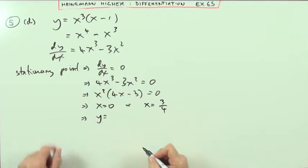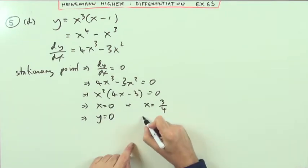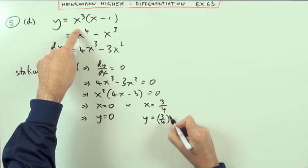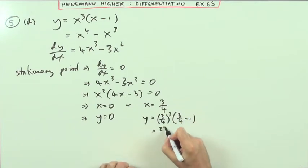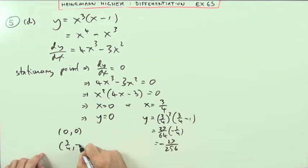At the same time, work out what y would be using the formula. That one's easy. Nothing times anything is nothing. For this one, though, it's a bit more of a calculation. I've got 3 quarters cubed. I'll just put it down first of all. I've got 3 quarters cubed times 3 quarters minus 1. Well, 3 quarters cubed, that would be 27 over 64. And taking my 1 means times negative a quarter. So it's going to be negative 27 over, and that's going to be 256. So the two points would be something happens at 0, 0, and something happens at 3 quarters, negative 27 over 256.